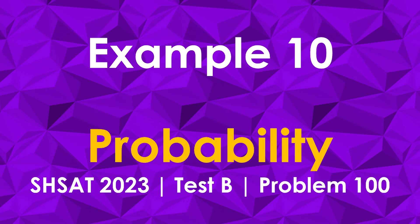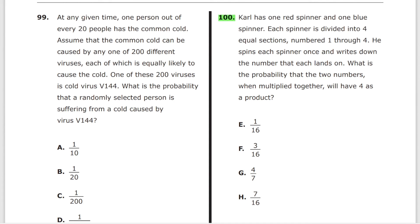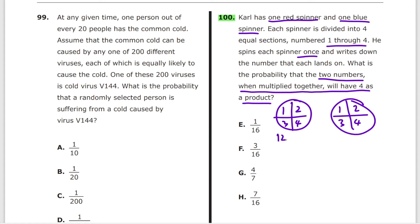Problem 100. This is probably the most complicated probability problem in SHSAT 2023. Carl has one red spinner and one blue spinner. Each spinner is divided into four equal sections numbered 1 through 4. He spins each spinner once and writes down the number that each lands on. What is the probability that the two numbers when multiplied together will have 4 as a product? The reason why it's complicated is because it's really difficult to visualize what's happening. So let me help you. You got this spinner. It says 1, 2, 3, 4. Now you got this spinner. It also says 1, 2, 3, 4.